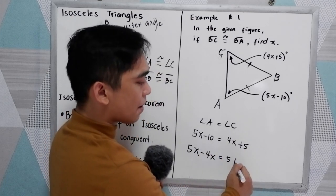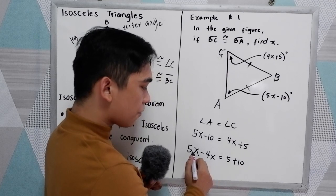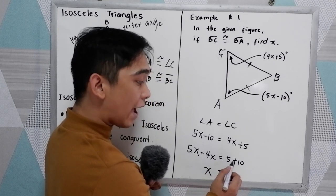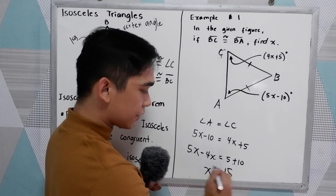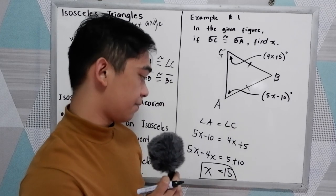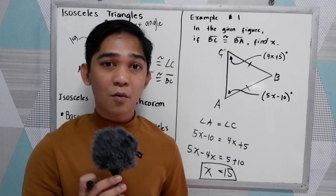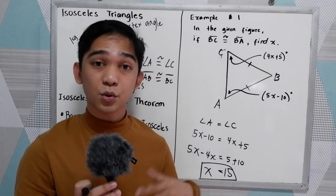Negative 10 will become positive 10 here. So 5X minus 4X. That is X. Is equal to 5 plus 10. That is 15. So the value of X here is 15. Let us proceed to our example number 2 and number 3.